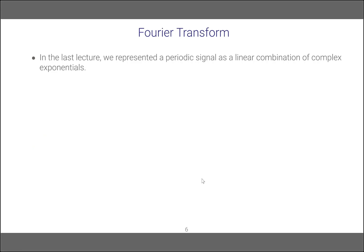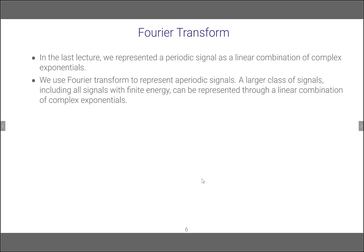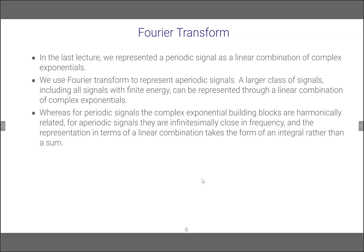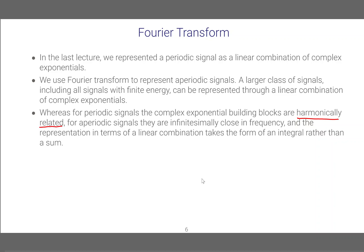In the last lecture we represented a periodic signal as a linear combination of complex exponents. So we use Fourier transform to represent aperiodic signals. A large class of signals, including all signals with finite energy, can be represented through a linear combination of complex exponentials. For periodic signals, the complex exponential building blocks are harmonically related. For the periodic signals, when we computed the Fourier series, we saw that each signal is composed of e to the power of j·k·ω₀·t. This means the frequencies are integer multiples of ω₀, which is the fundamental frequency, so the building blocks are harmonically related.